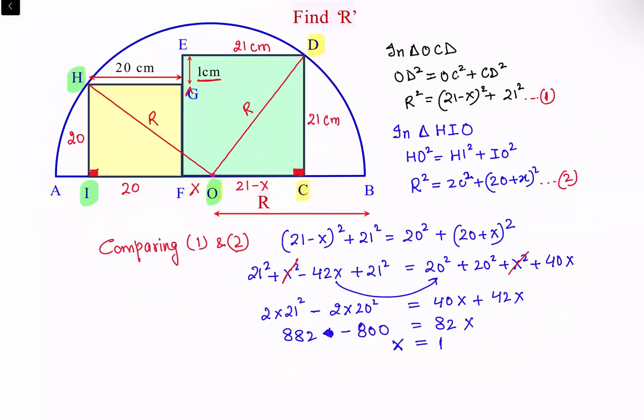Now here value of X is one. We have to find the radius. So we can use either one of the equation, either your observation one or observation two. So I am using observation two.